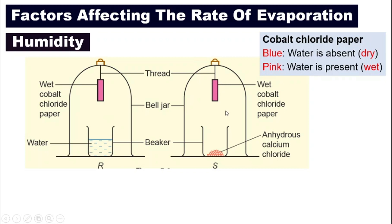We can hang two strips of cobalt chloride paper inside two bell jars — bell jar R and bell jar S. The cobalt chloride paper will be sprayed with some water to make it wet so it becomes pink. Inside bell jar R, we put a beaker filled with water so that the air inside this jar is wet and humid. The humidity in bell jar R is high.